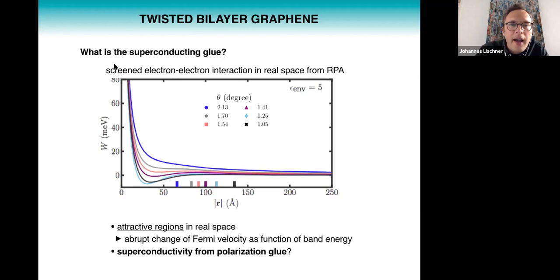What we did is we calculated the screened electron-electron interaction where we now take screening into account not from the environment as before but from the electrons in the twisted bilayer itself. So we're talking about internal screening which we calculated using the so-called random phase approximation. Here I'm showing you a result for the screened interaction as a function of distance between the two electrons for different twist angles. The blue curve here is for a twist angle of 2 degrees and you see that this interaction is always repulsive as you would expect. But as you approach the magic angle you see that there is actually an attractive region in the interaction.